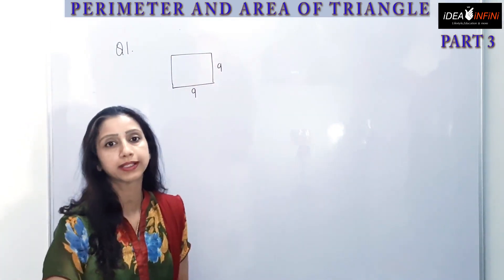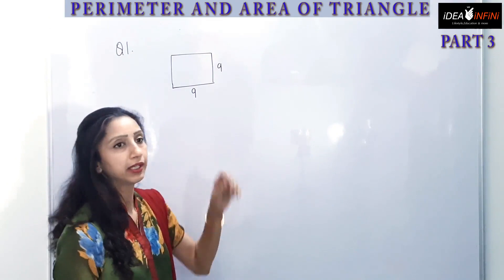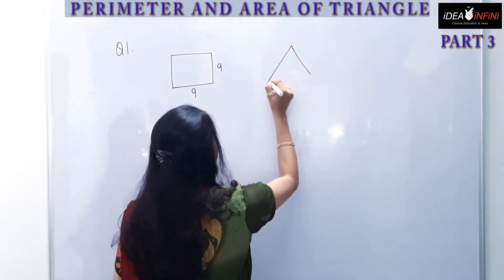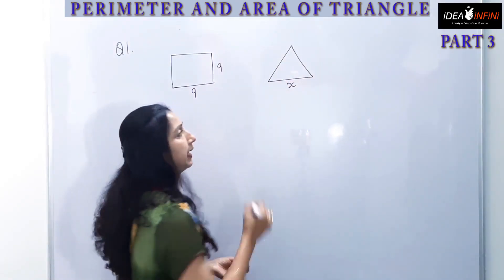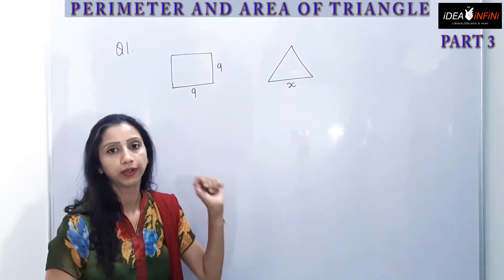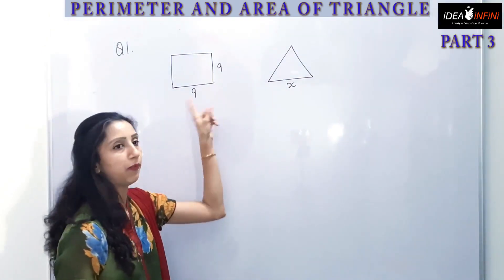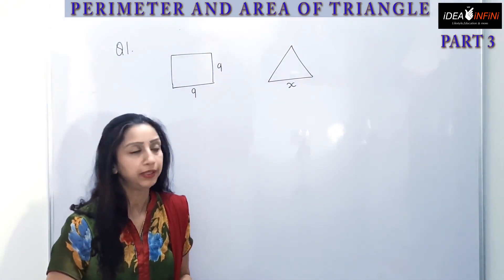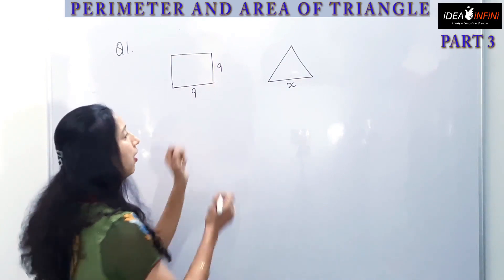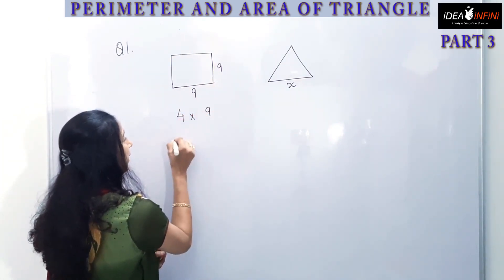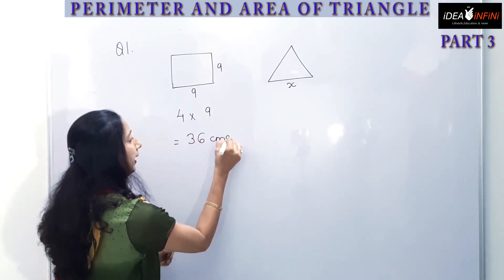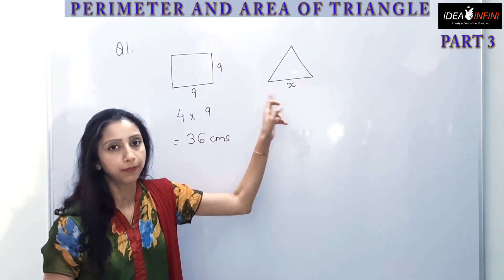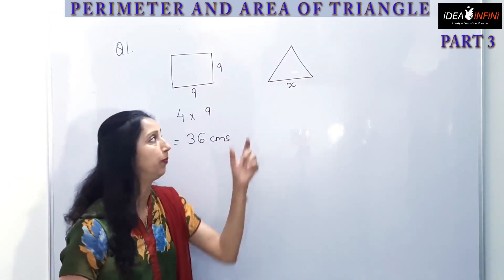Let's make a rough figure — a square with side 9 centimeters. This wire is first opened up and then re-bent to make an equilateral triangle. Let's name the side of the triangle as x. When a wire is re-bent, the total length gives the perimeter: 9 + 9 + 9 + 9 = 4 into 9. The perimeter of the square and the perimeter of the triangle will be the same because the same length of wire is used.